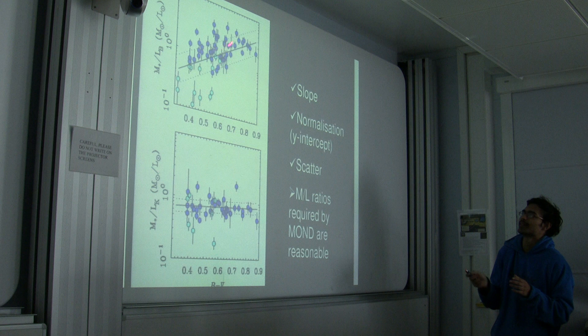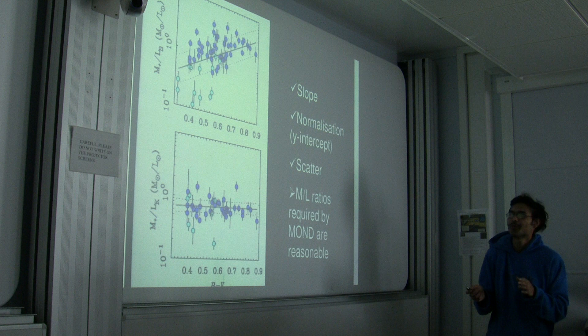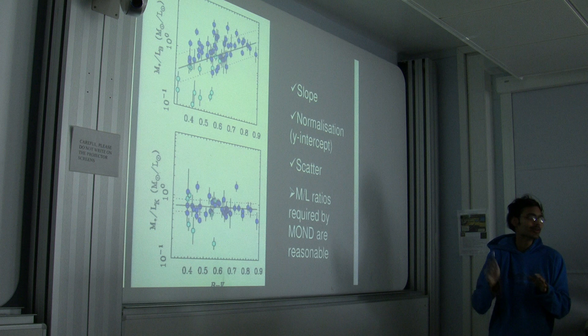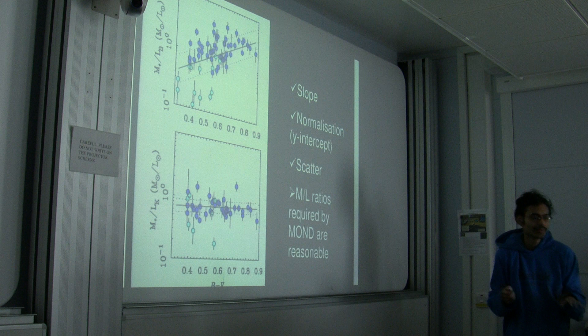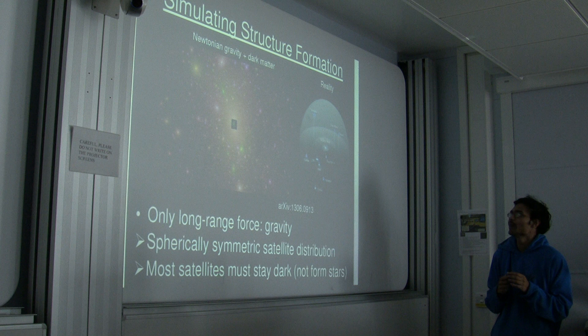In the infrared band it's similar; observations often work better in infrared because there's a much shallower gradient. The main thing to realize is that the mass-to-light ratios being used to fit the rotation curves are actually reasonable — they're not just pulled out of the air. Now I'll focus on the formation of structures — that's really what I wanted to talk about.